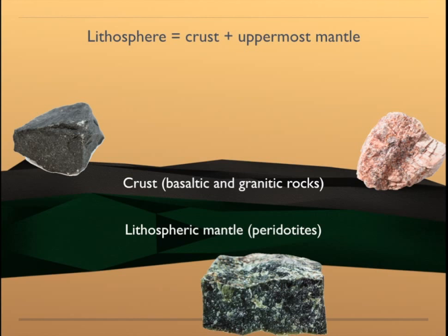Underneath the crust is the top section, which we call the lithospheric mantle, and this is made of rocks called peridotite. So peridotite is a sort of greenish rock that contains minerals like olivine, spinel, garnets especially, and orthopyroxenes.